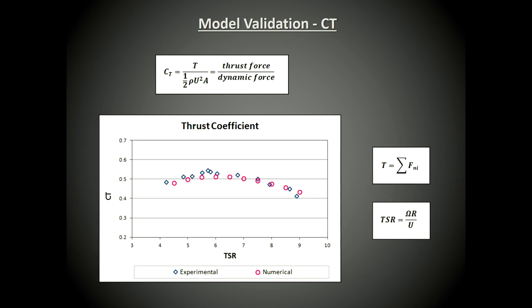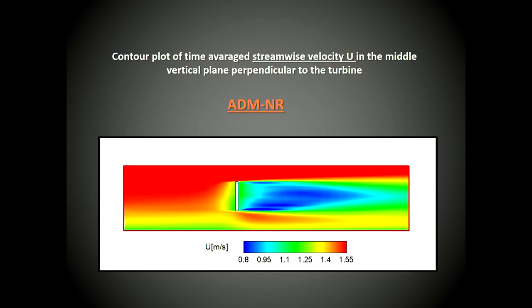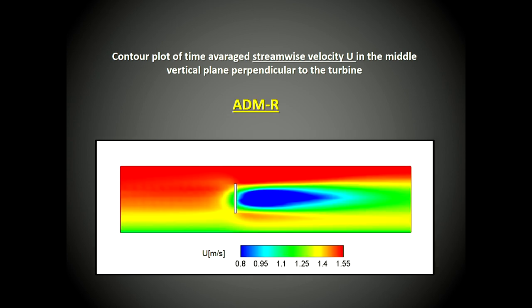We did the same for the thrust coefficient, which is the ratio between the thrust force and the dynamic force. This is important for the loads of the rotor, again versus the tip speed ratio. These are the plots of the wake downstream the rotor. This is the case of the actuator disk model without rotation, in particular this is the time average of the streamwise velocity in the vertical plane. This is for the actuator disk model with rotation. The difference is clear: for the actuator disk model with rotation, the wake is symmetric and more similar to the experimental measurements.